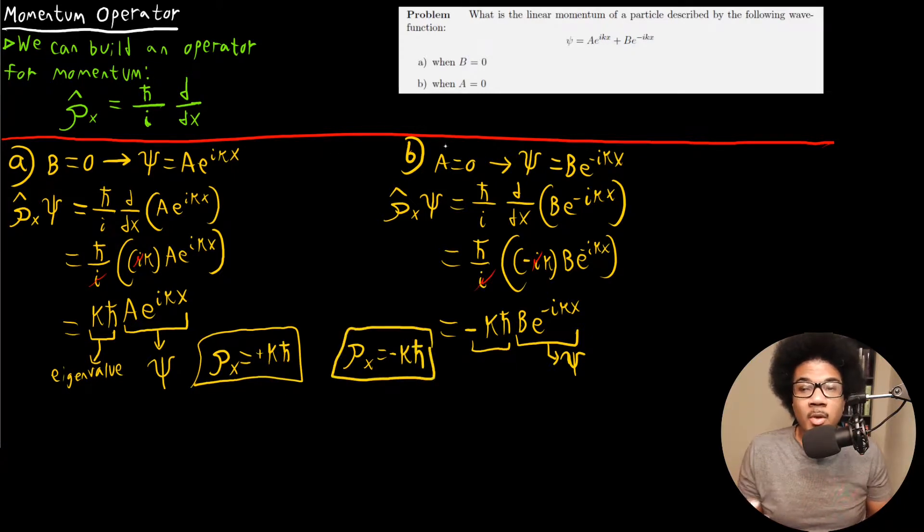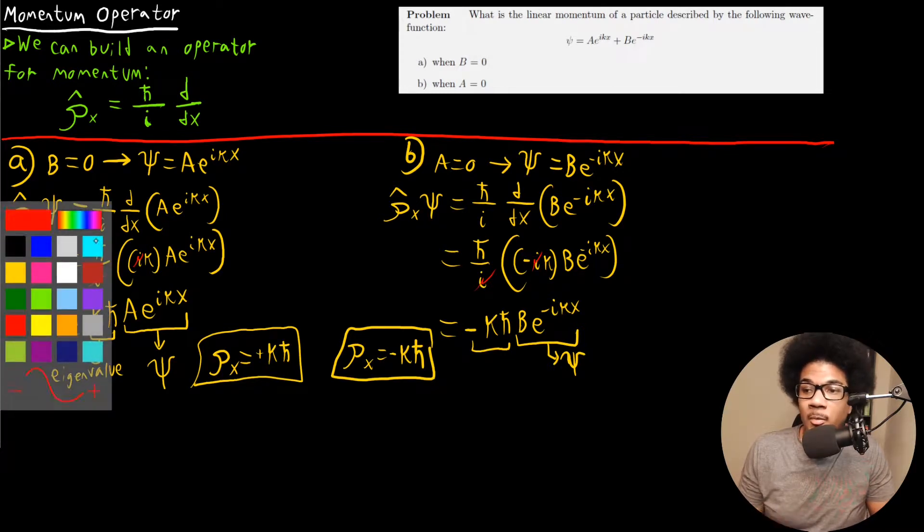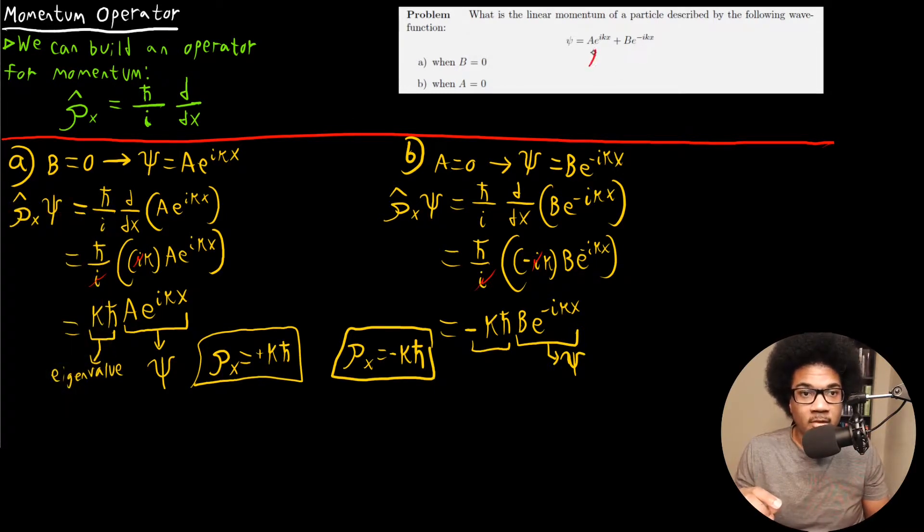From this, we can actually interpret a pretty interesting feature about this wave function, the two pieces of this superposition. If you take out each term, you have a particle traveling with the exact same momentum. However, they're traveling in different directions. Because in one case, you have a momentum of positive KH bar. In the other case, you have a momentum of negative KH bar. So you could interpret this as this function is corresponding to motion in one direction, let's just say the left.